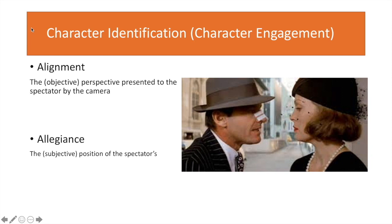Alignment is the objective perspective presented to the spectator by the camera. If you have a central character, but at certain moments we hear dialogues or are present somewhere the character is not, that's alignment working independently. In Casablanca, Bogart is the central character, but there's a scene where Sam is talking to Ingrid Bergman's character about the songs and the past without Bogart's presence — not all information to build the story is presented through the central character's point of view. Allegiance, on the other hand, is when the spectator's position is very subjective — we follow the character almost exclusively, as in detective films where everything is revealed as the detective discovers clues.